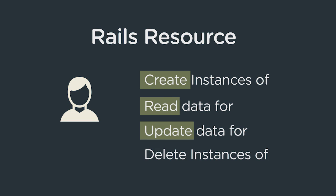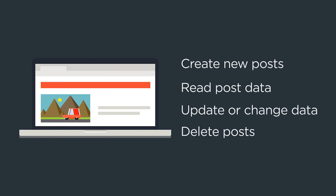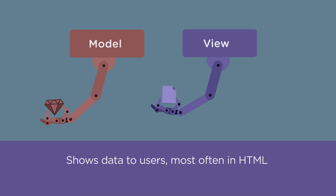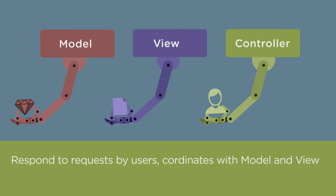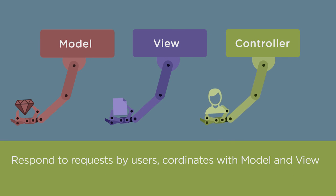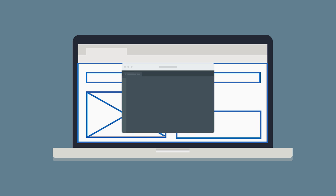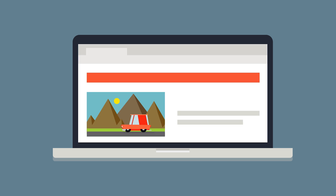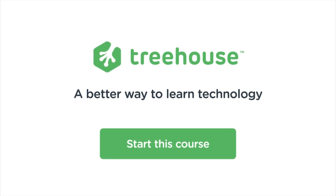Then we'll dive into what we've created and help you really understand what's going on. We'll show you how to work with models, views, and controllers to quickly add new features to your app. By the end of this course you'll be ready to create basic web apps in Rails. Let's get started! Click the link to head over to Treehouse and take this course.